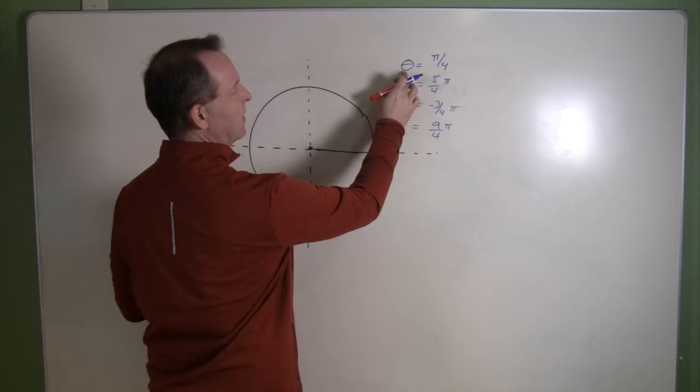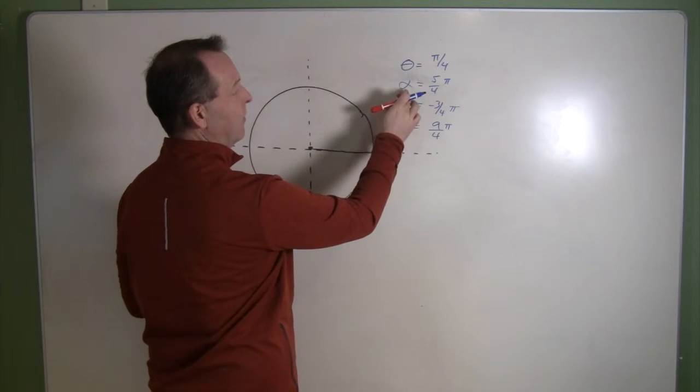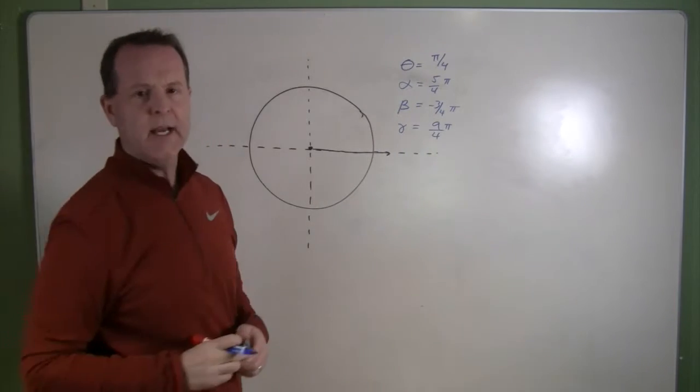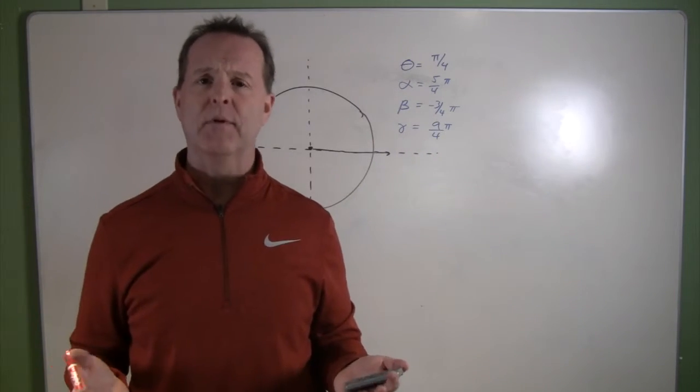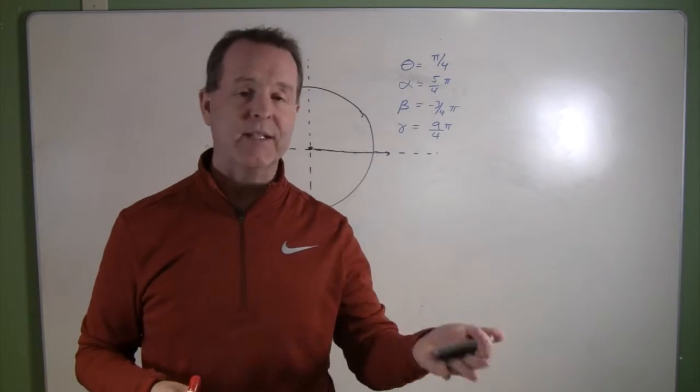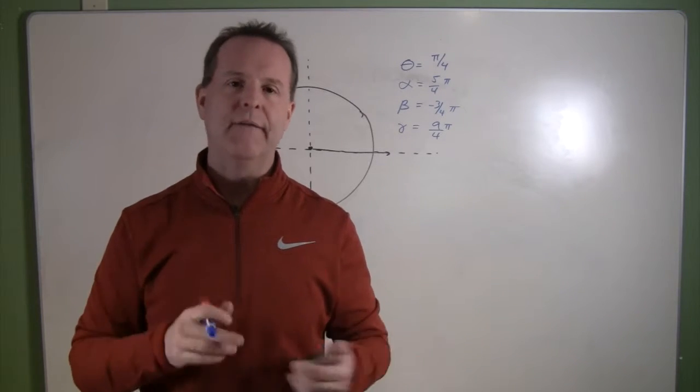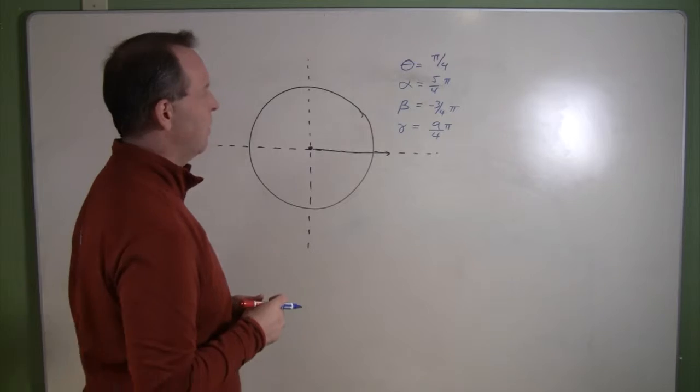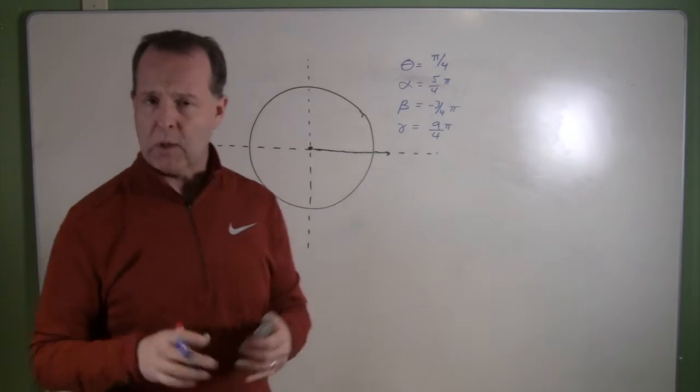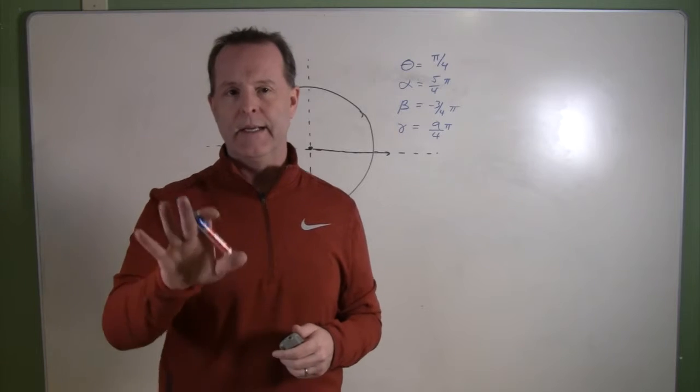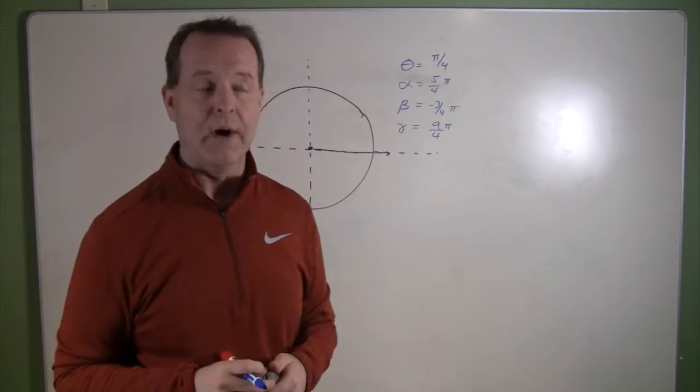We're going to see angles described as theta or alpha or beta or gamma. Those are just designational variables like we're used to in the past where we had x, y's and z's. In trigonometry we're going to use theta, alpha, gamma, and beta. So don't let that throw you off, but it took me a little time to get used to it. You might be easier to track on that than I was.